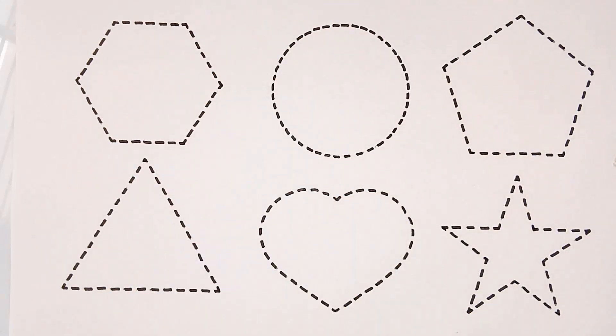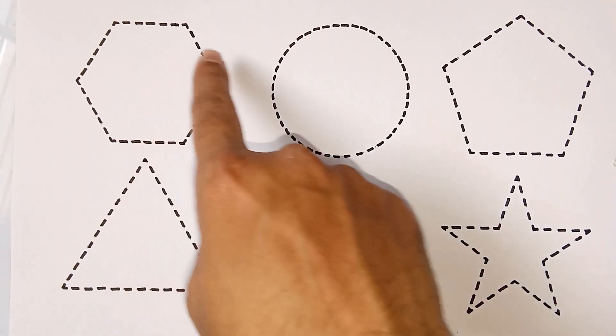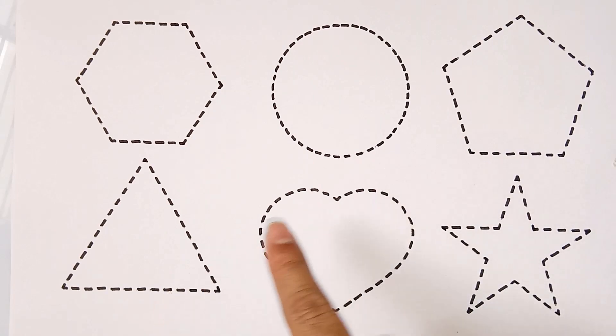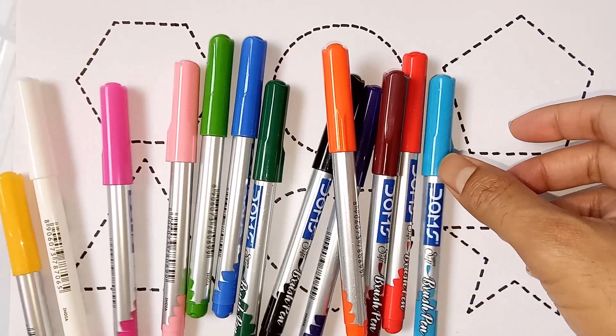Hello kids, welcome to Study Center. Today we are learning our 2D shapes: hexagon, circle, pentagon, triangle, heart, star. It is our colors.